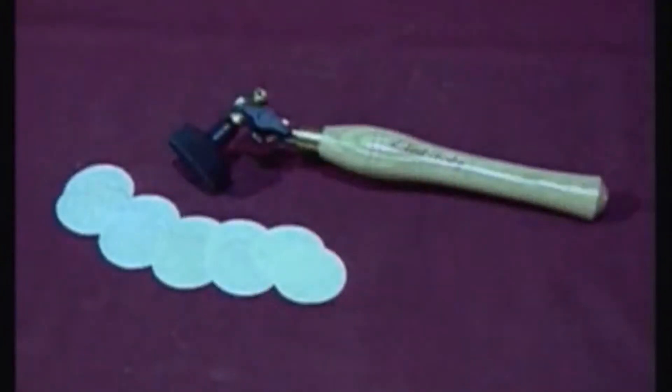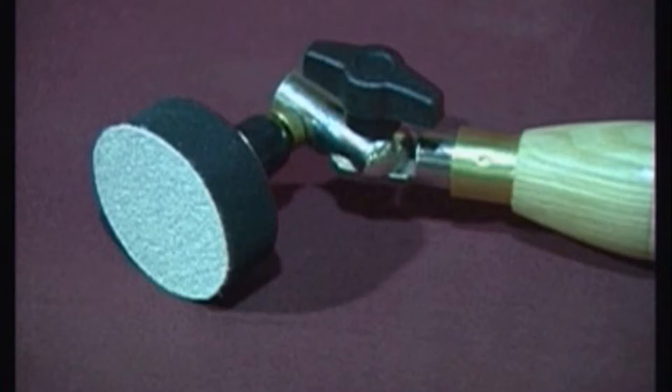A recently developed tool from Robert Sorby is the Sandmaster. This system provides a safe and effective method of finishing most items of lathe turned work. A 2 inch diameter sponge head is fitted with a velcro pad that is used in conjunction with cloth backed abrasive discs.